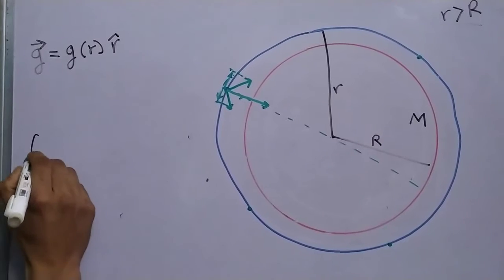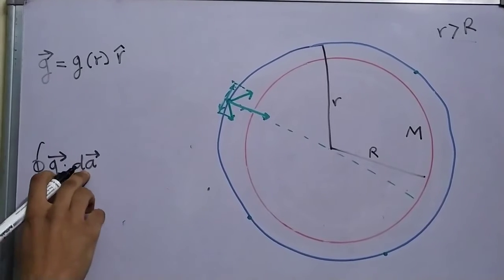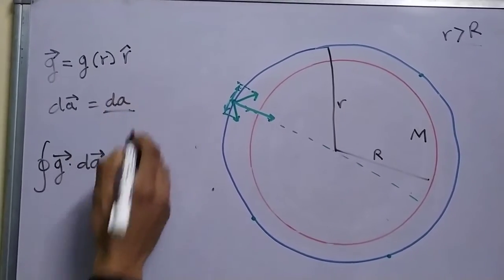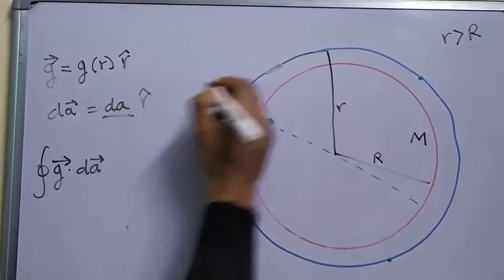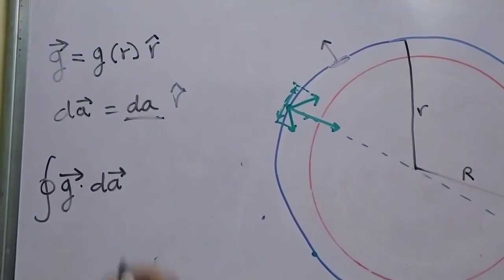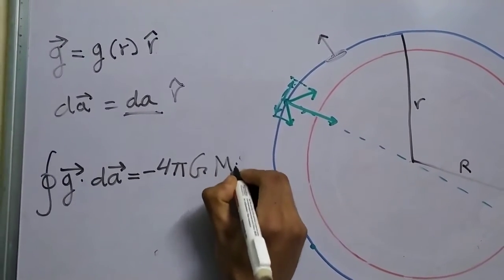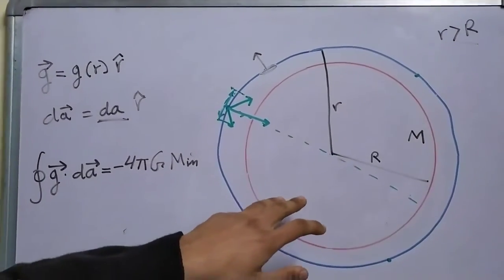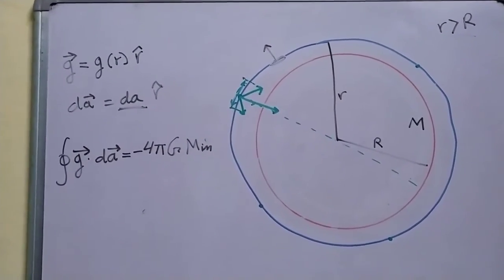Gauss law says that the surface integral G dot dA, dA is the area element, so dA will be the magnitude of a small area differential element, and it points radially outward as R cap, is equal to minus 4 pi G m internal. As I have shown in my previous video, the flux, only the internal masses contribute to the flux.